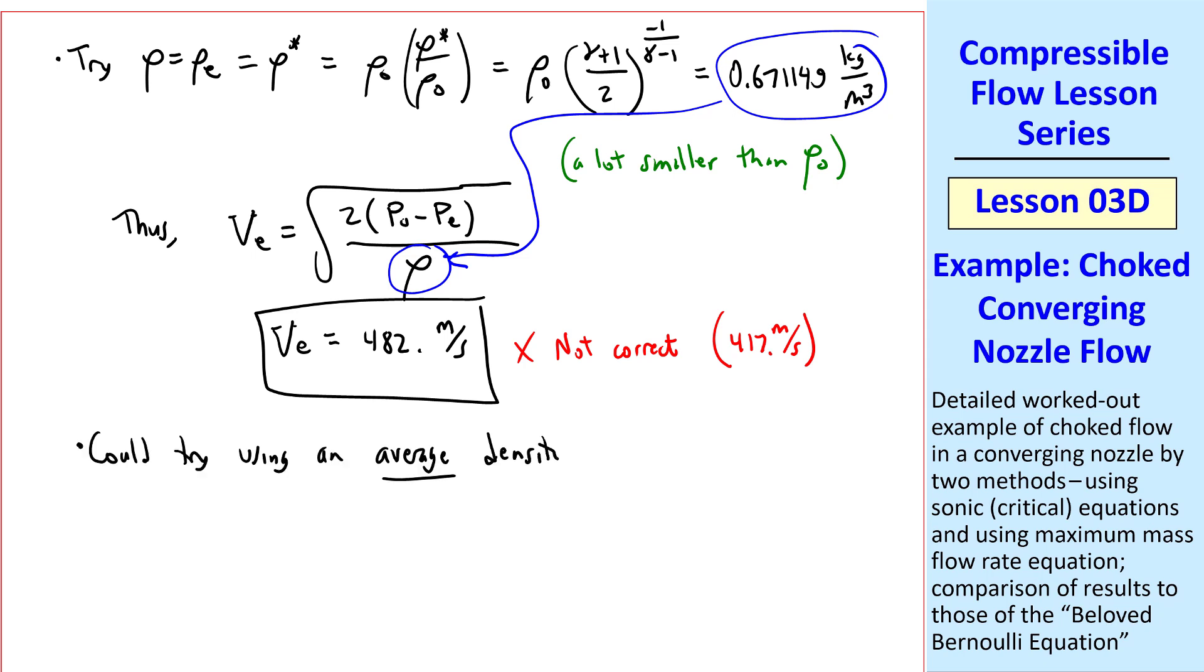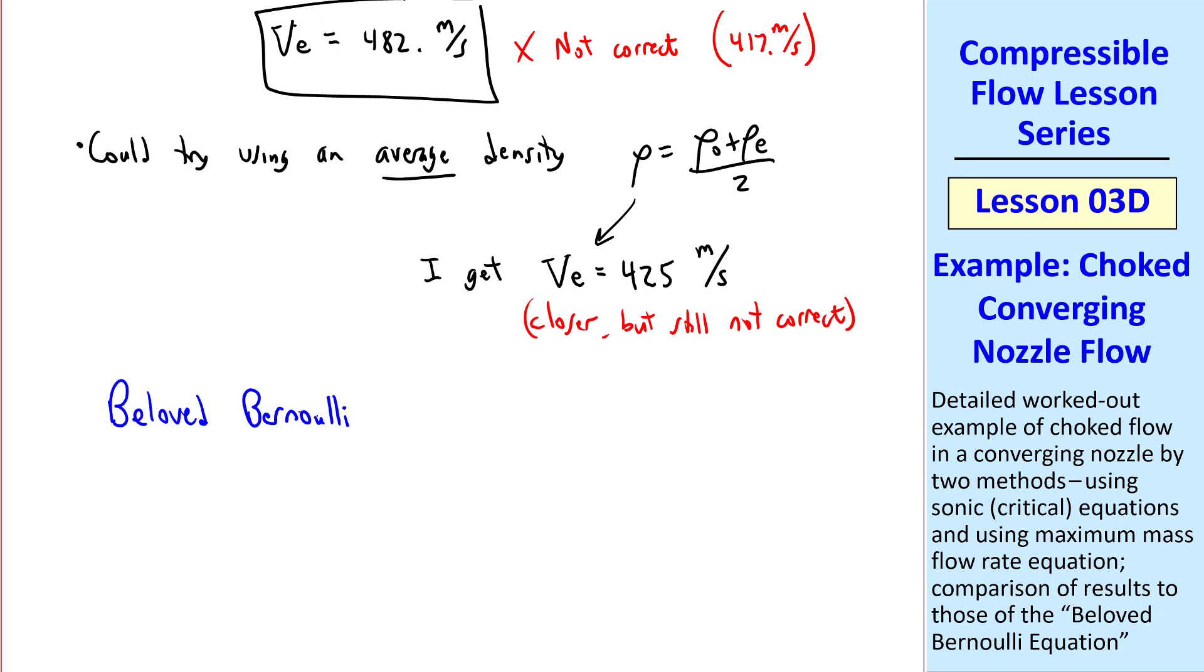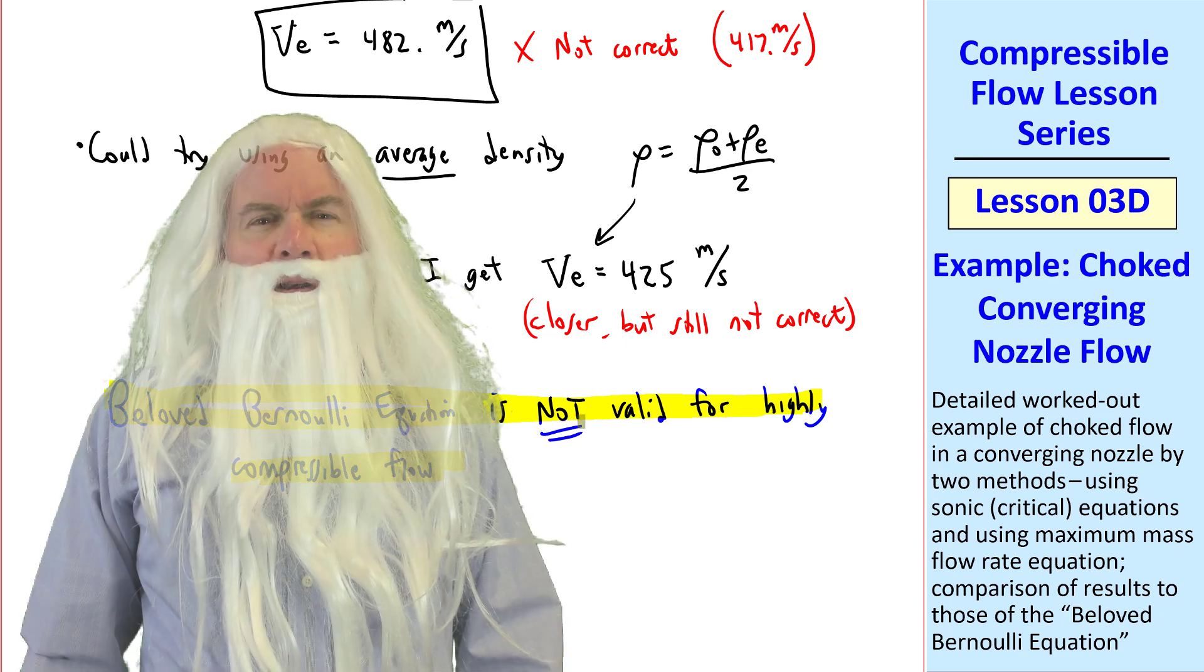You could try using an average density, rho naught plus rho E over 2. I won't show any of my work, but when I do that, I get 425 meters per second, which is a lot closer but still not correct. The bottom line is that the beloved Bernoulli equation is not valid for highly compressible flow. That's because beloved Bernoulli is an incompressible equation.